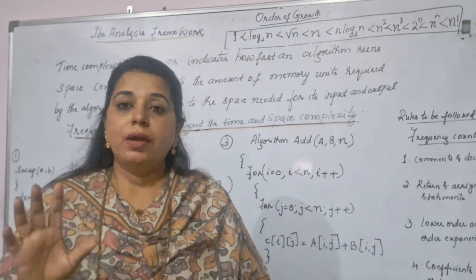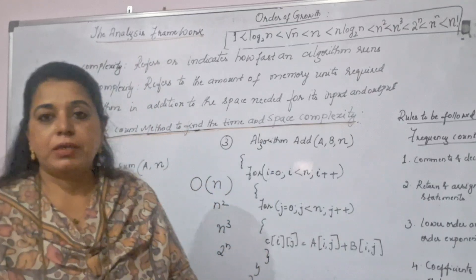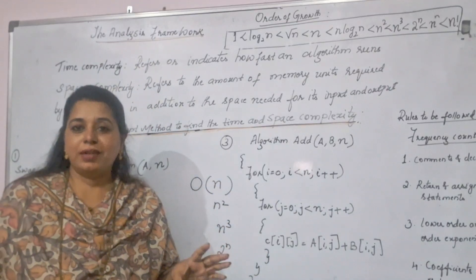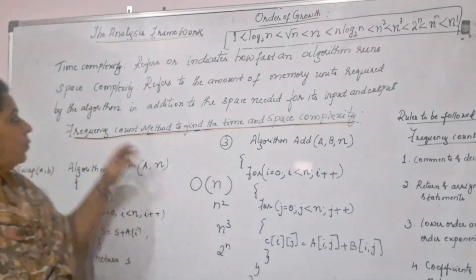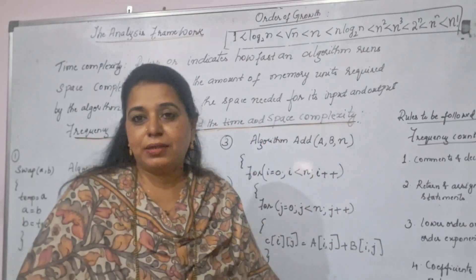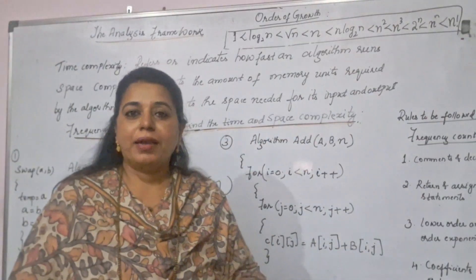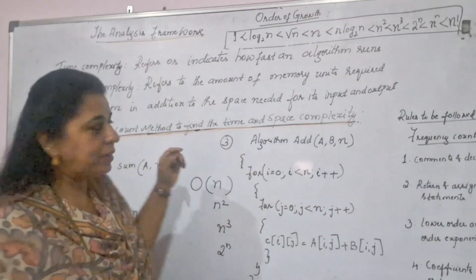And moreover, you should know what is the definition for the time complexity and what is the definition for the space complexity. These are the two important things in this particular subject, analysis and design of algorithms. So, how do you define time complexity? It refers or indicates how fast an algorithm runs. Basically, the time taken by an algorithm to complete its execution is called the time complexity.